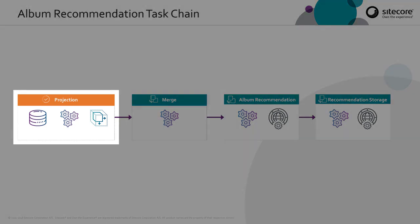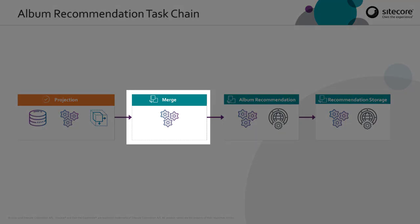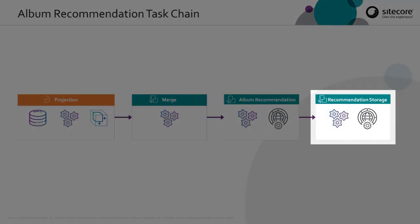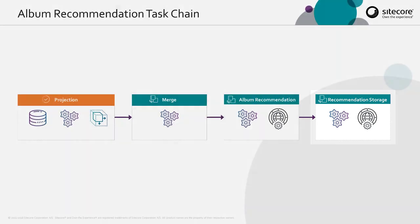We start with a projection task, which allows us to extract the data from XConnect and project it in the format that we need. Then we need a merge task to pull all of that disparate projected data back into a single table. Next, we have a custom album recommendation task — for this one we're going to be using an external service. After that, we have a recommendation storage step: once we get the return value for our album recommendations, we're going to be storing that using an external service.